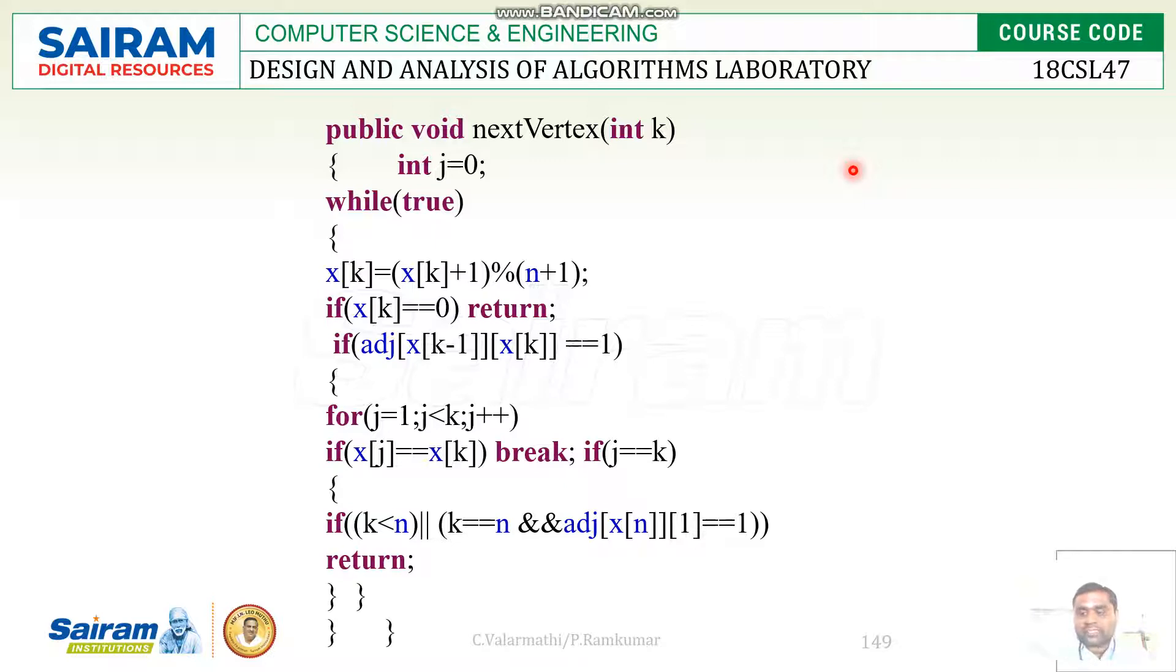Then if there is any direct edge existing, we have to choose those vertices. Until it becomes true, we have to keep computing the adjacency vertices by x[k] = x[k] + 1 modulus n + 1.